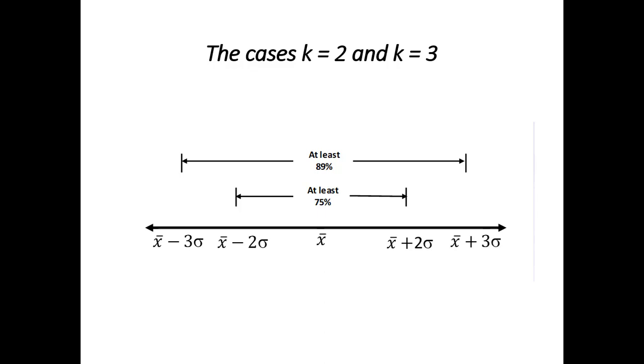Here's a visualization with a number line. This is telling us that if I have a mean, and if you think of this interval as being the mean plus two standard deviations and the mean minus two standard deviations, we get at least 75% of the data in this interval. And if we extend this to three standard deviations, then we get at least 89% of the data.